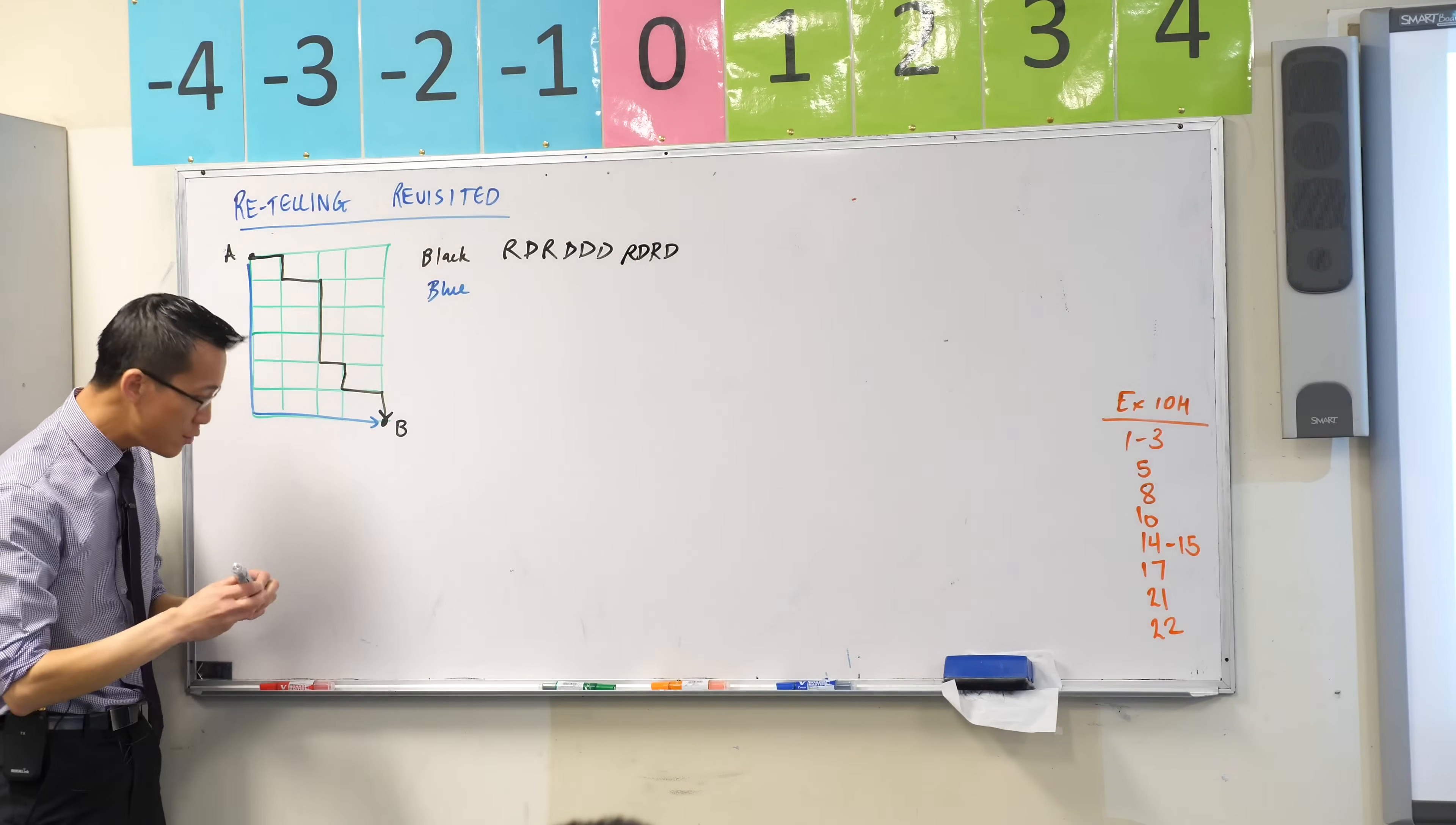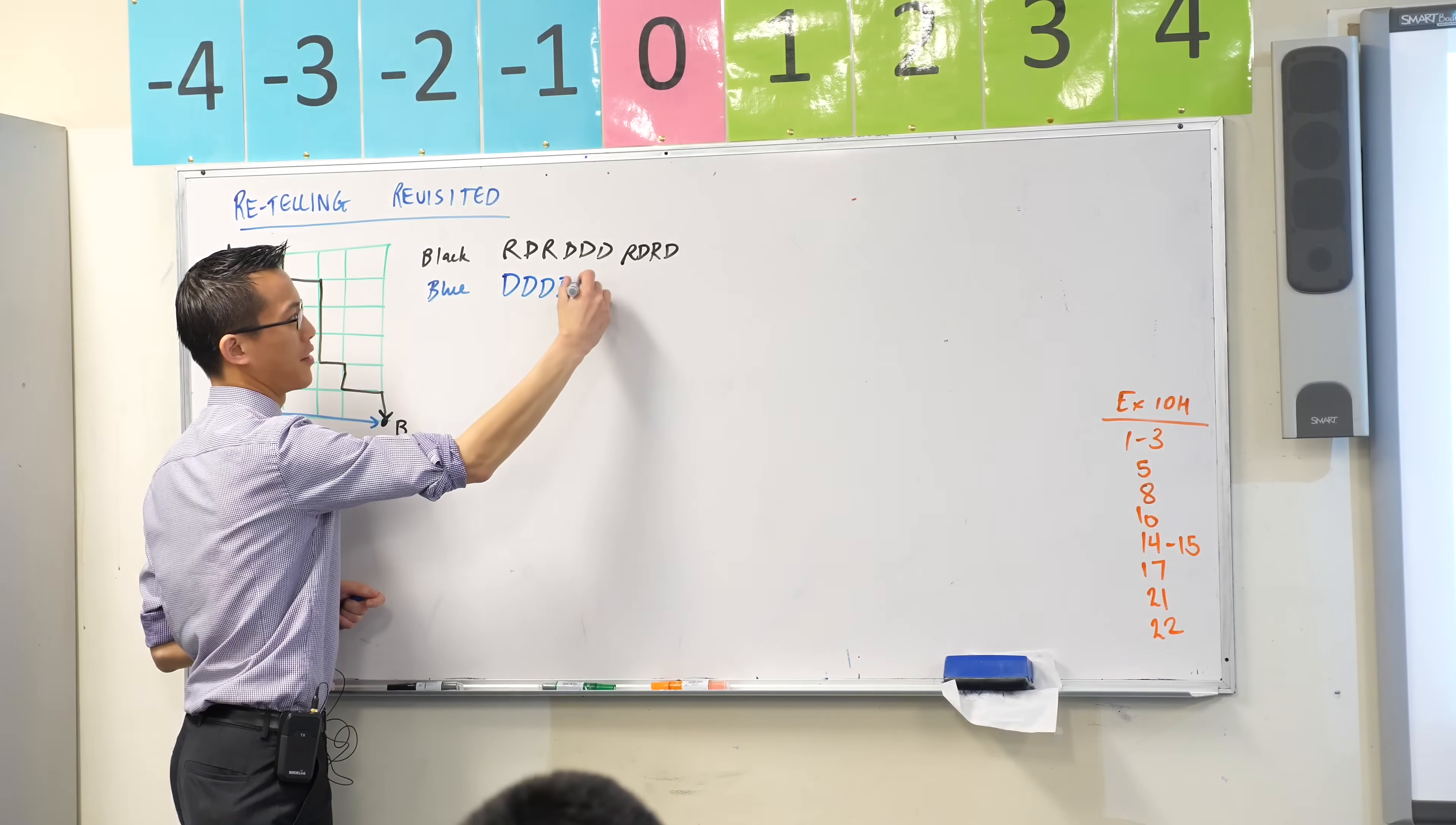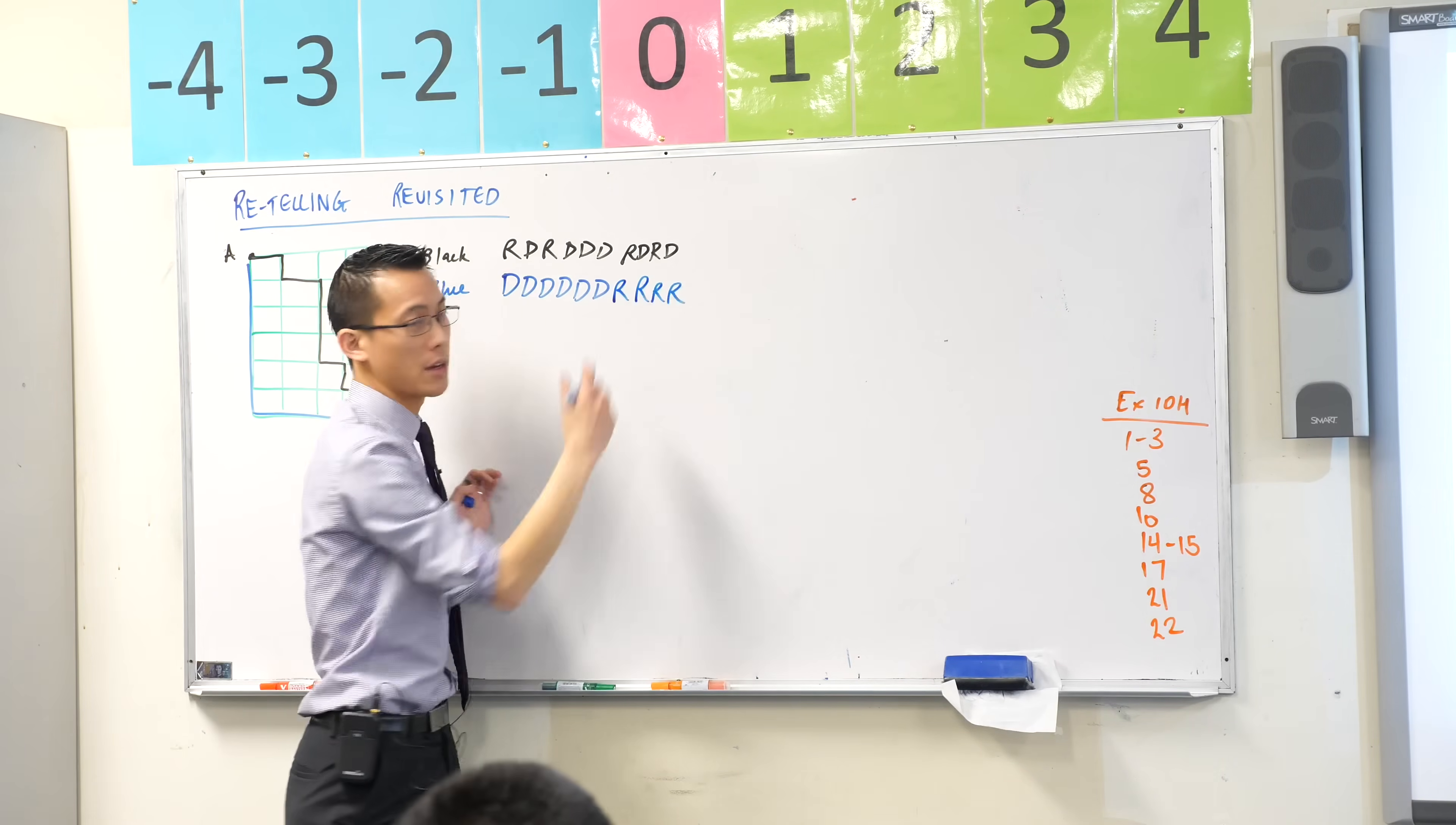All right, now describe to me, it's an easy one, how do you describe the blue path? You go down, down, down, down, down, down. You do that how many times? Six times to get all the way to bottom, and then you do all the rights. How many? Four of them.